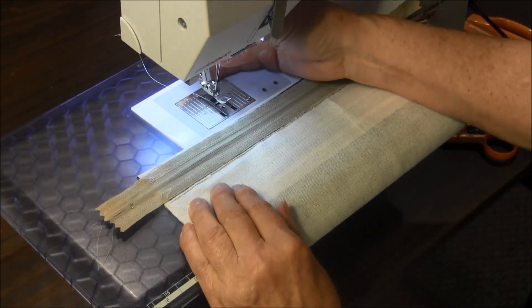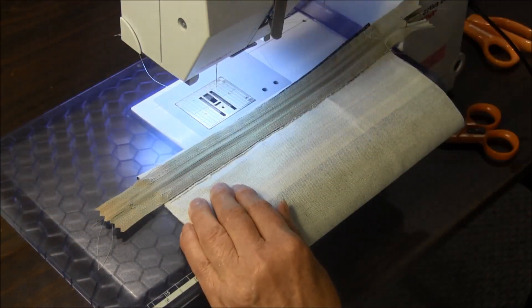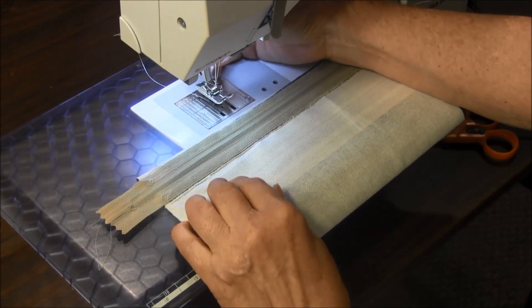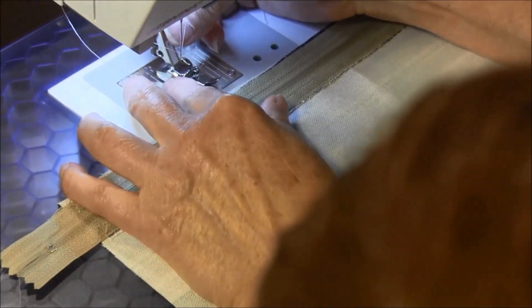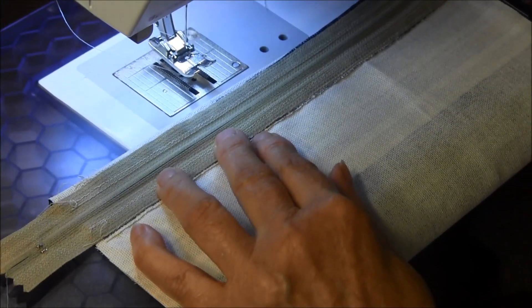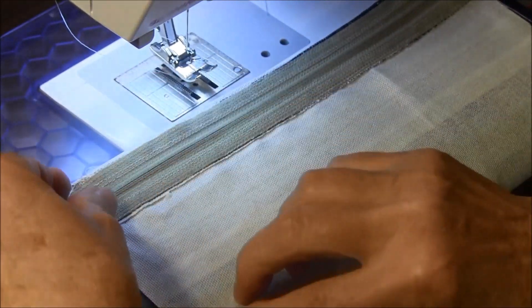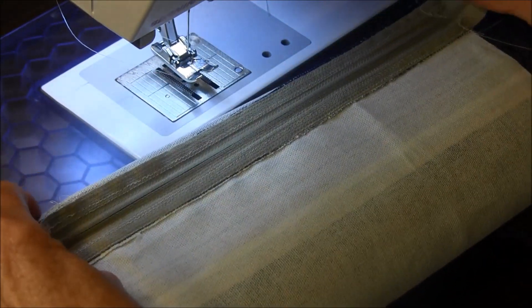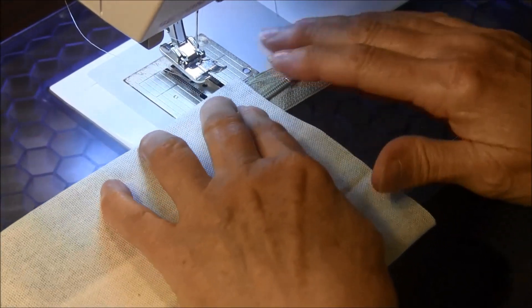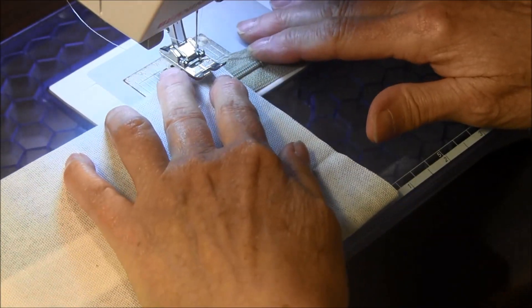Alright, I'm going to remove my zipper foot and put in my regular foot. Put my needle back in the center position. And then right along the side that is not the zipper pull side, the other side, we're going to stitch three-eighths of an inch.